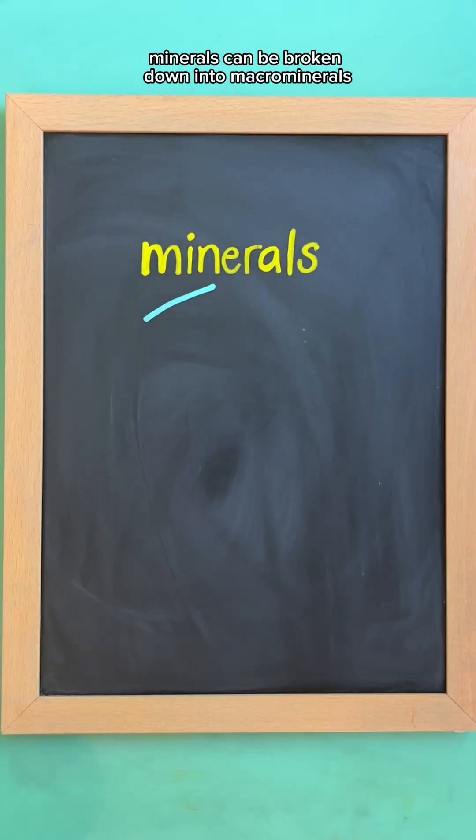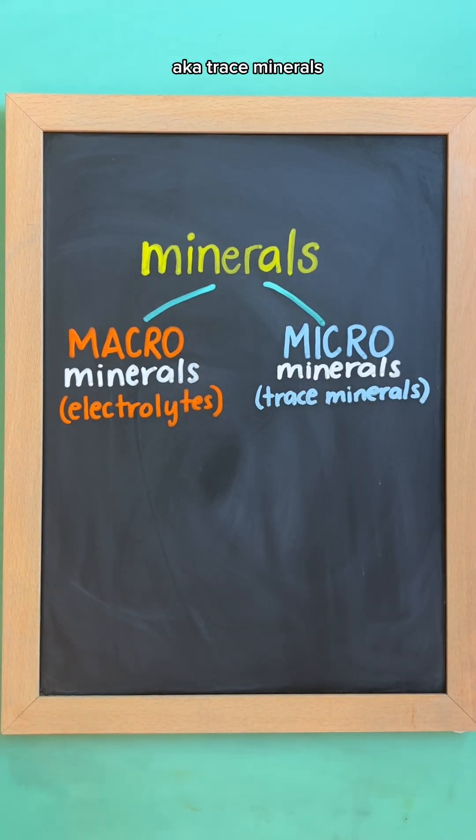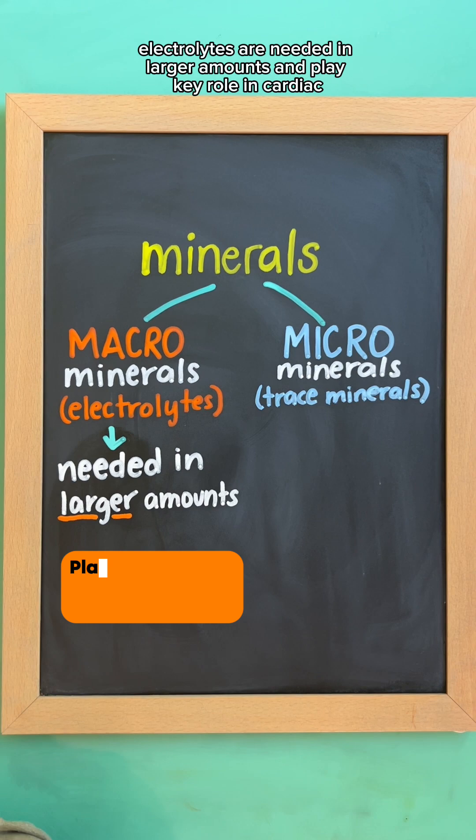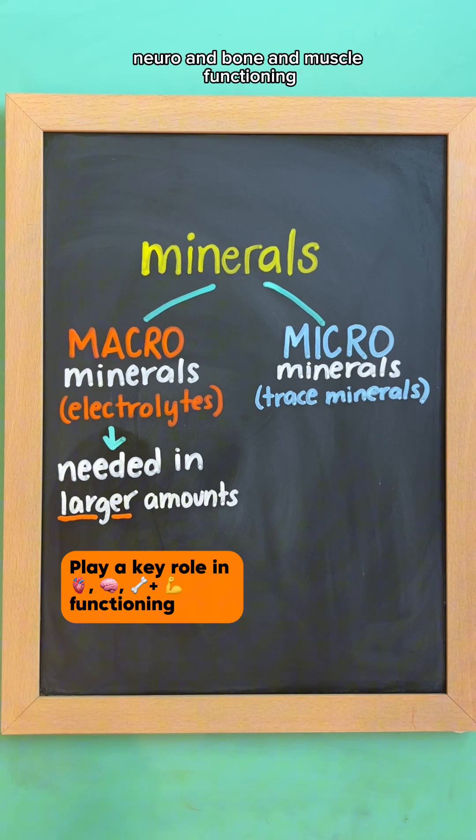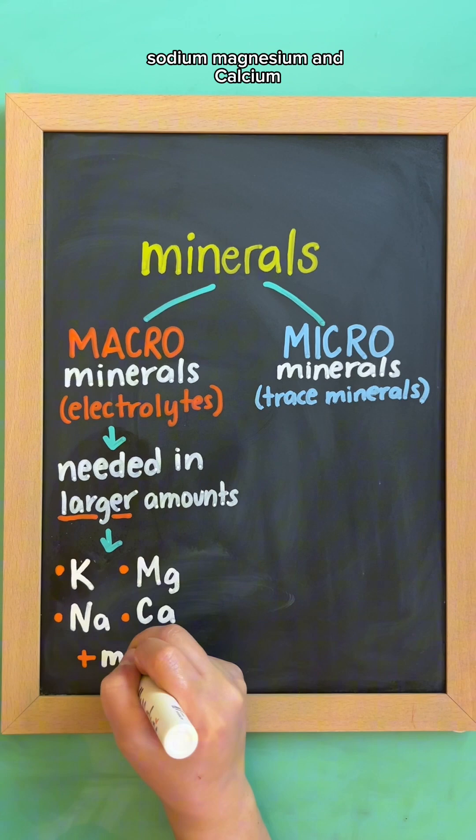Minerals can be broken down into macrominerals, also known as electrolytes, or microminerals, also known as trace minerals. Electrolytes are needed in larger amounts and play a key role in cardiac, neuro, and bone and muscle functioning. These include minerals like potassium, sodium, magnesium, and calcium.